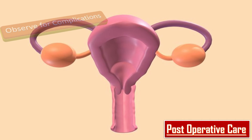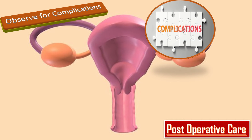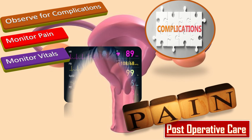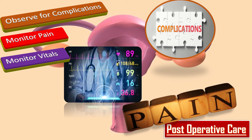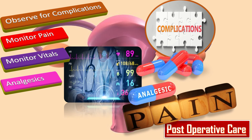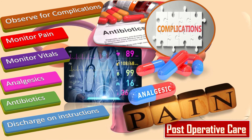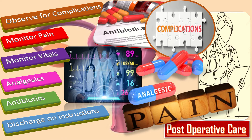For post-operative care, first observe for any complications like bleeding, pain, and fever. Monitor pain and treat accordingly. Monitor vital signs. Give oral analgesics like acetaminophen and ibuprofen for pain relief, and give a full course of antibiotics to prevent infection. Discharge the patient with instructions for aftercare and follow-up, and also give advice regarding contraception.